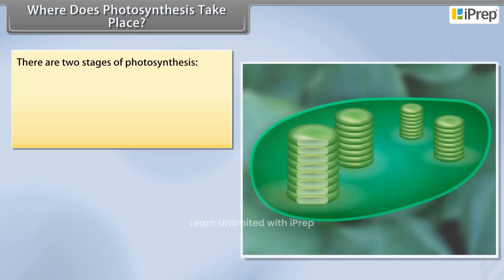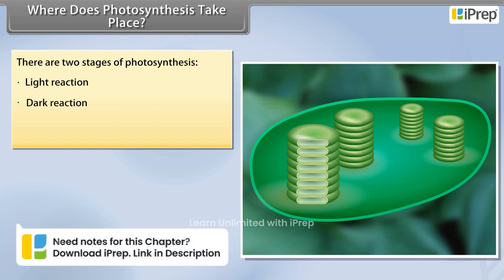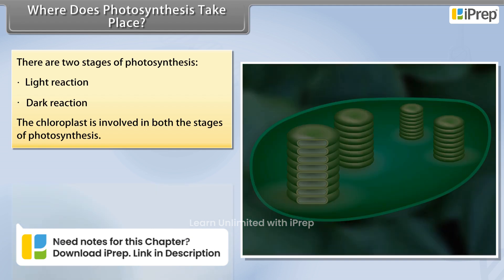There are two stages of photosynthesis. The first stage is light reaction and the second stage is dark reaction. The chloroplast is involved in both stages of photosynthesis.